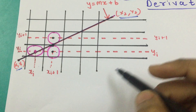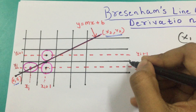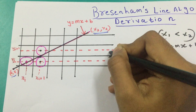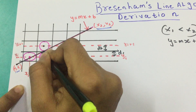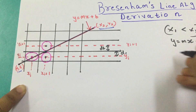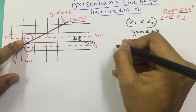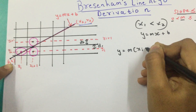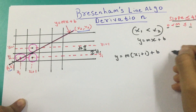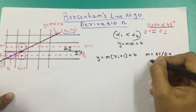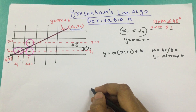This decision has to be made using the distances of the line with regard to these two points. I'm going to take this distance as d1 and this distance as d2. First, let's find the y-coordinate at this point. Since the equation of the line is y equals mx plus b and the next coordinate is xi plus 1, the y-coordinate at that point will be y equals m times (xi plus 1) plus b, where m equals delta y over delta x, b is the intercept, delta x is x2 minus x1, and delta y is y2 minus y1.